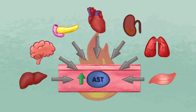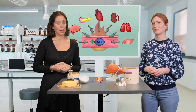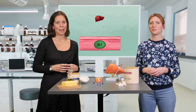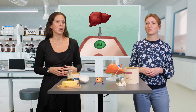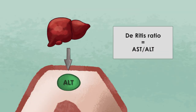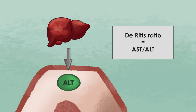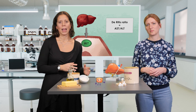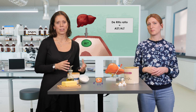While high AST levels mean there might be a tissue injury, it doesn't always relate to the liver. By contrast, ALT is found mainly in the liver. Therefore, it is common to use the ratio between AST and ALT for the diagnosis of liver disease. This is called the AST-ALT ratio, also known as the Ritis ratio. In healthy individuals, the ratio between AST and ALT is around 1.